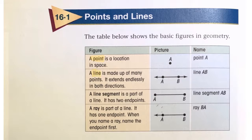A line is made up of many points. It extends endlessly in both directions. A line segment is a part of a line. It has two endpoints. Line segment AB.